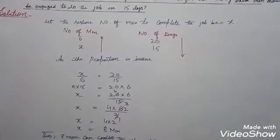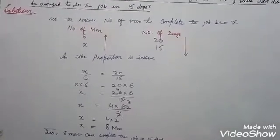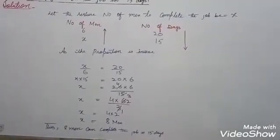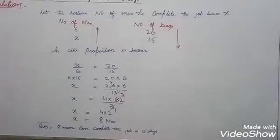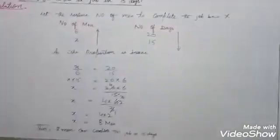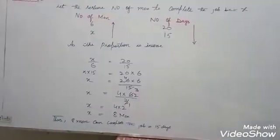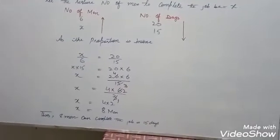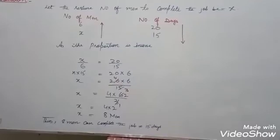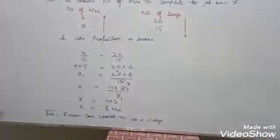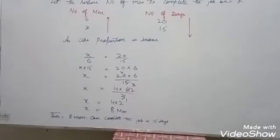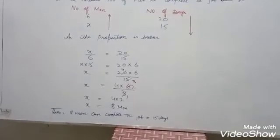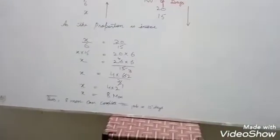For inverse proportion: x divided by 6 equals 20 divided by 15. Cross multiplying: x times 15 equals 20 times 6. So x equals 120 divided by 15. Cancelling — 20 and 15 have a factor of 5, giving 4 and 3; then 6 divided by 3 equals 2 — so x equals 4 times 2, which is 8 men.